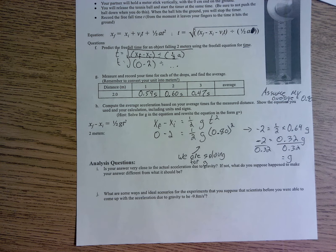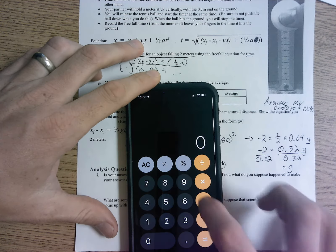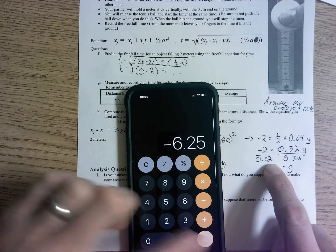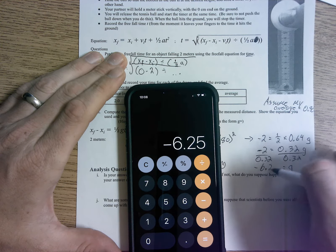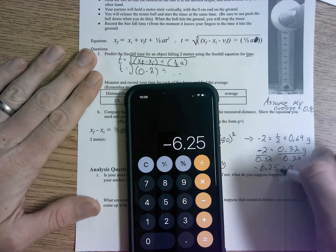And if I get my calculator out here, I find that negative 2 divided by 0.32 is negative 6.25. And it's gravity, so that would be like meters per second squared.